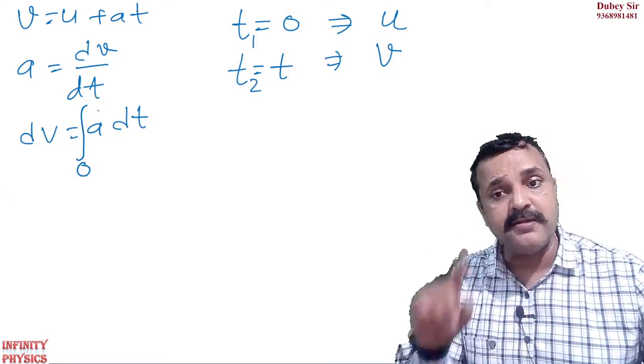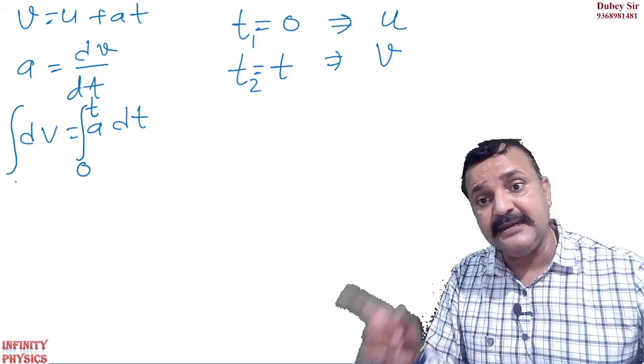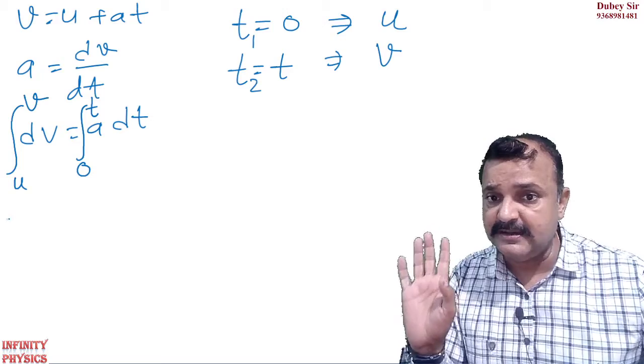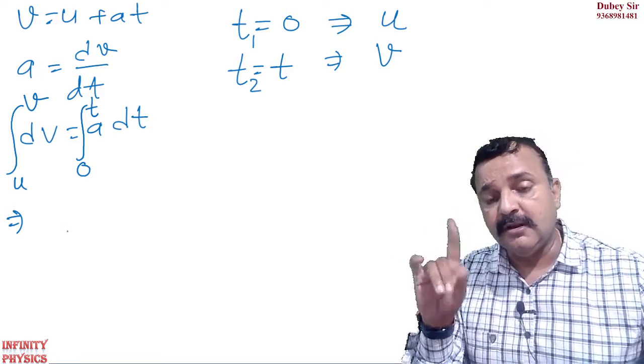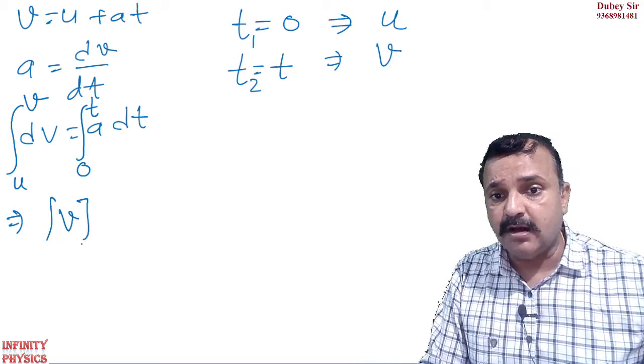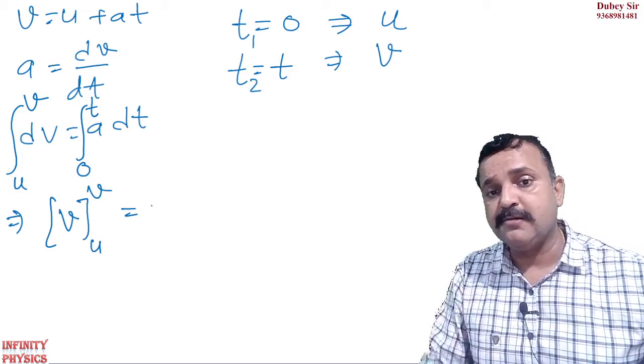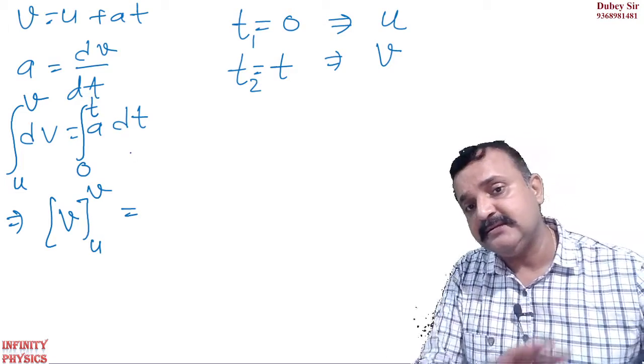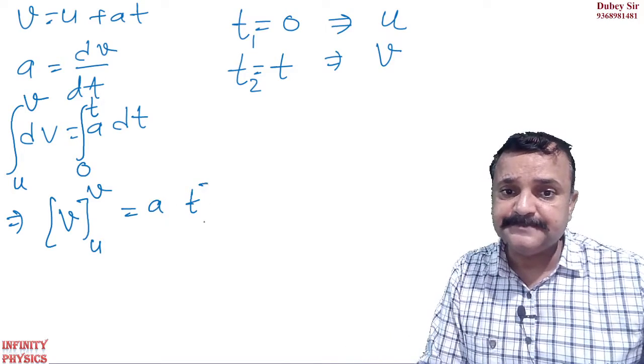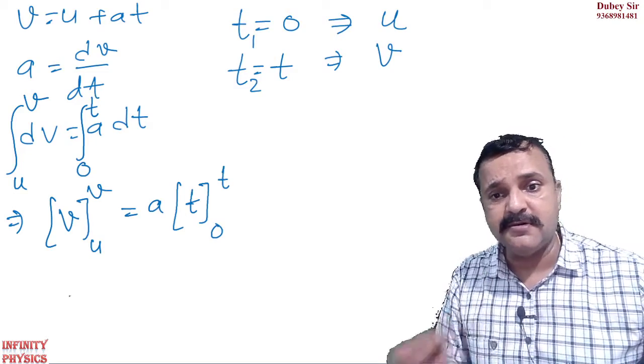To iska wadab wo limit diya hua hai. Yaha time period integration hai. Initial time kia hai? Zero. Final time kia hai? T. Aisai hi initial velocity kia hai? U. Final velocity kia hai? V. Kya samaj maaya?